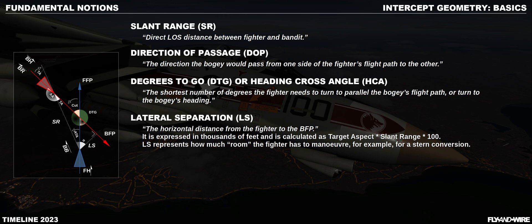This slide shows a bunch of definitions — nothing too complicated, but they are important. Slant range is the enhanced definition of range; it invokes three-dimensional space, defined as the line-of-sight distance between the two aircraft. Direction of passage is not used often, but can be helpful: DOP left to right means the target is coming from the left and moving towards the right. DTG and HCA are the same angle — the supplementary angle of the cut. This angle represents the number of degrees the fighter needs to turn to be parallel to the bandit: degrees to go to be parallel. Lateral separation describes the amount of room the fighter has to execute certain maneuvers; it is defined as TA × SLR × 100 and is normally expressed in feet.